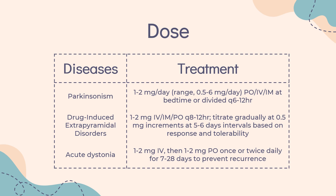For drug-induced extrapyramidal disorders: 1-2 mg IM or PO Q8-12 hours. Titrate dose in 0.5 mg increments at 5-6 day intervals based on response and tolerability, not to exceed 6 mg per day. Re-evaluate after 1-2 weeks; therapy may be re-initiated if symptoms recur. For acute dystonia: 1-2 mg, then 1-2 mg per day or twice daily for 7-28 days to prevent recurrence.